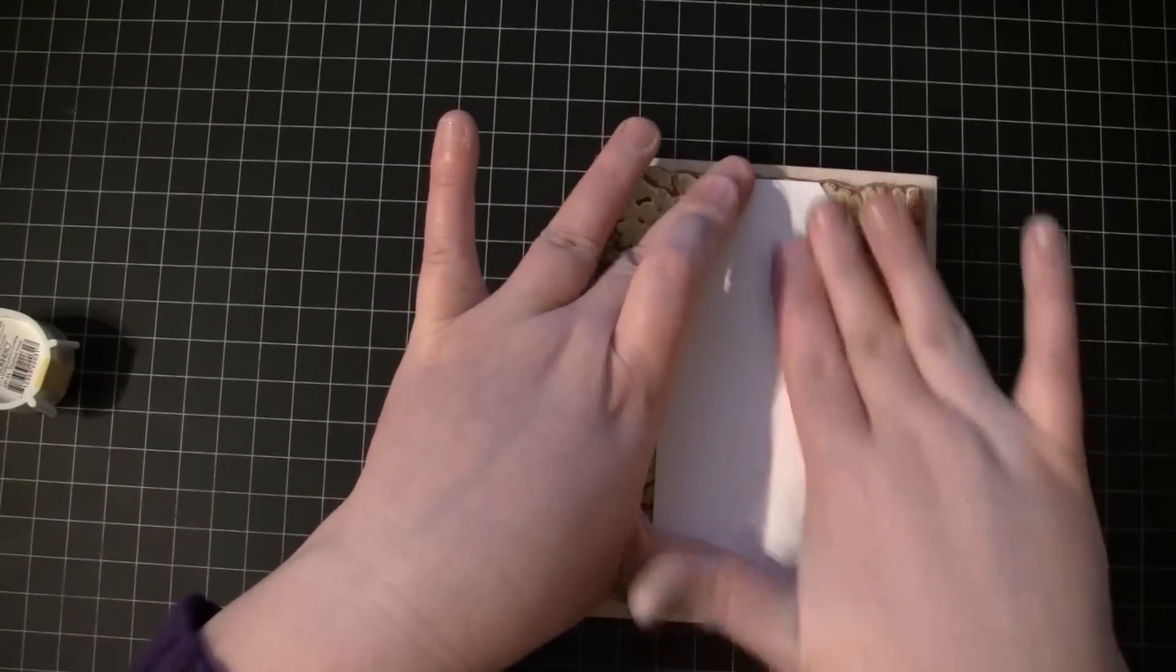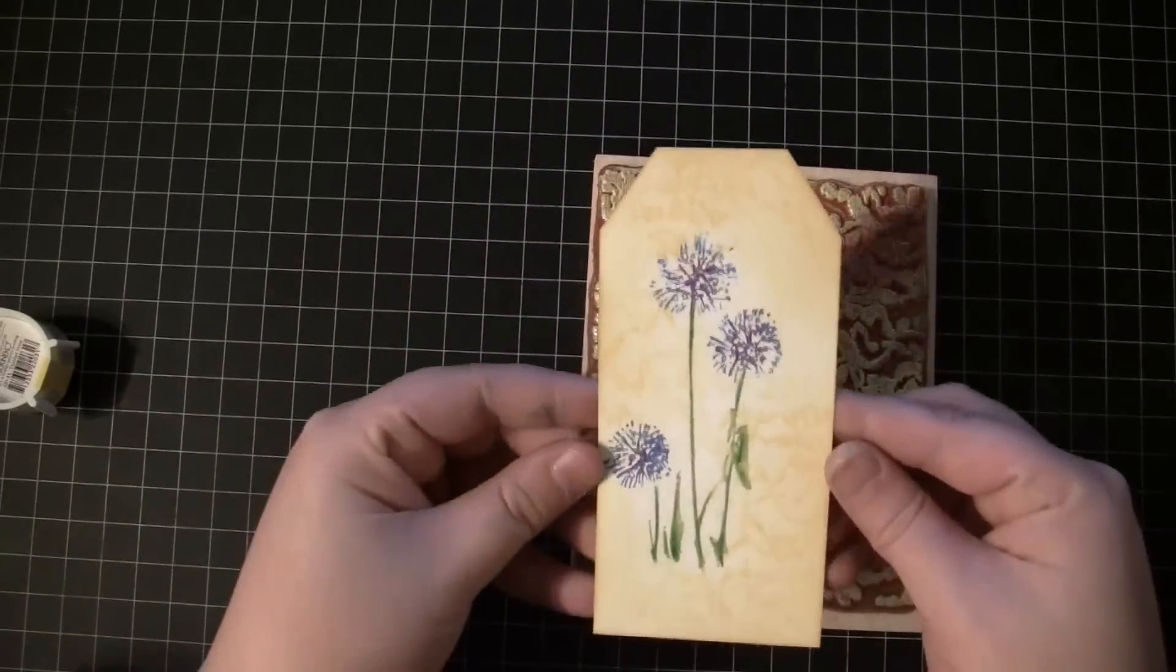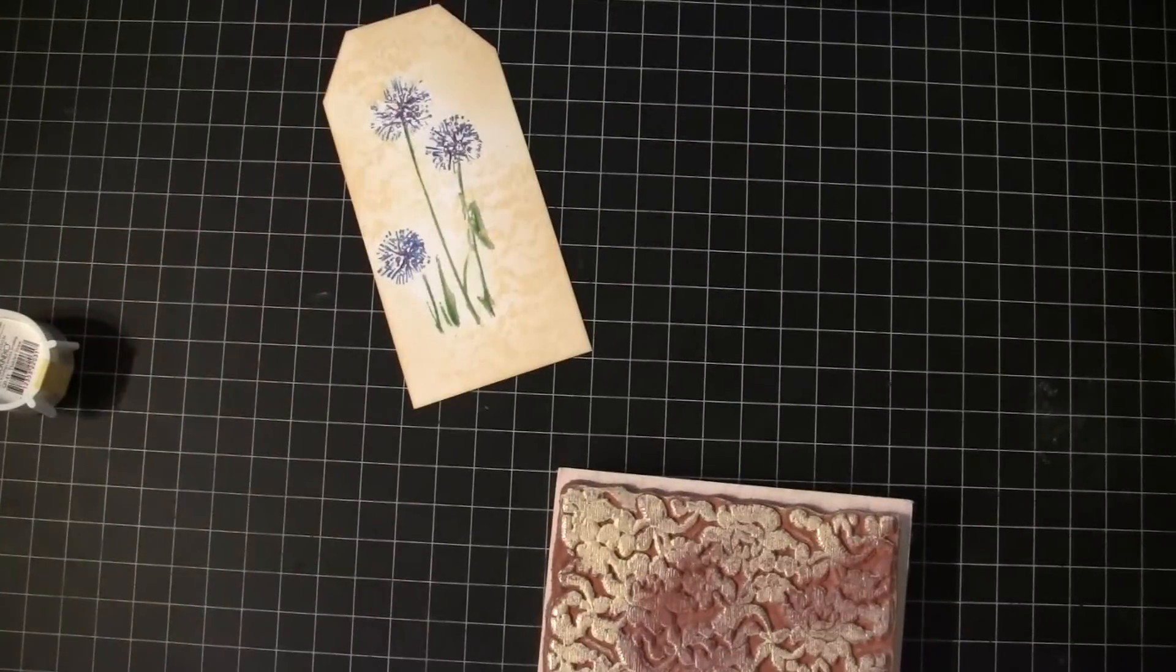I'll lay my tag on top, hold with one hand and rub with the other. And you could lay a piece of scratch paper on top here to protect it if you wanted. And there you can see that really subtle background.